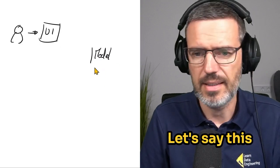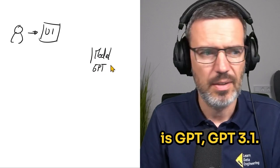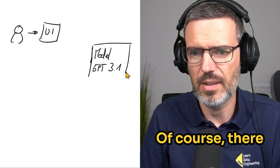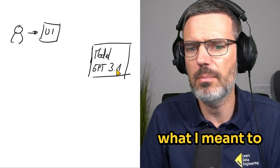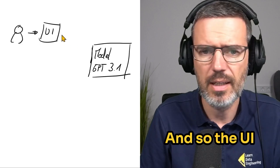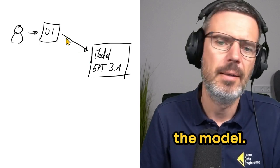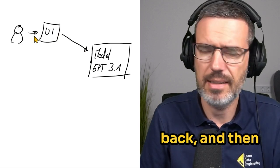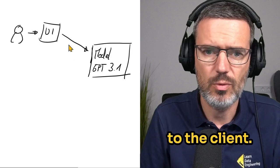Let's say this is GPT 3.1. Of course, there is no 3.1, but what I meant to say is this is a version of GPT 3. And so the UI is going to ask the model, here's the query, get the results back, and then sends the results to the client.